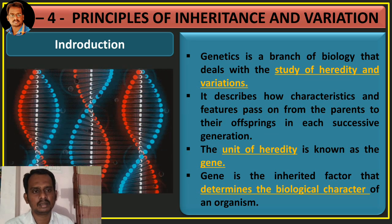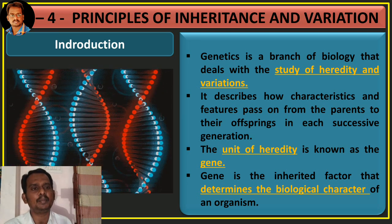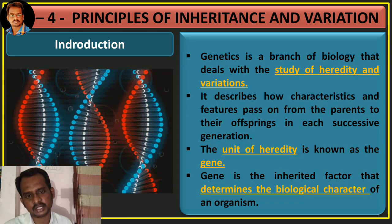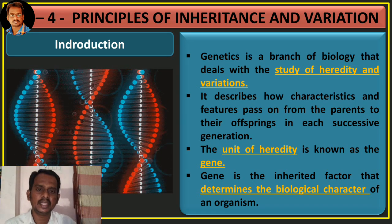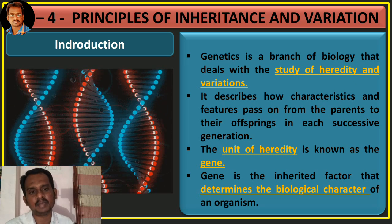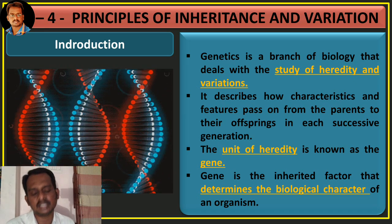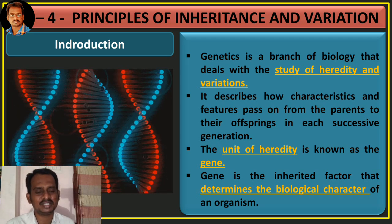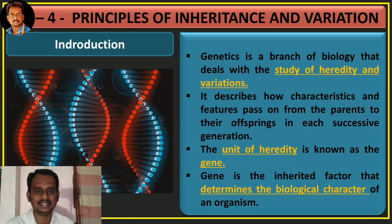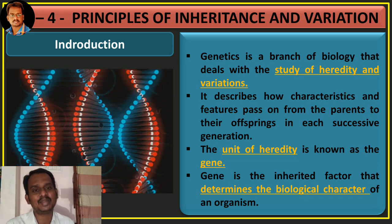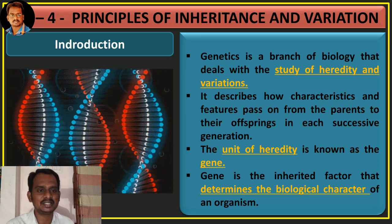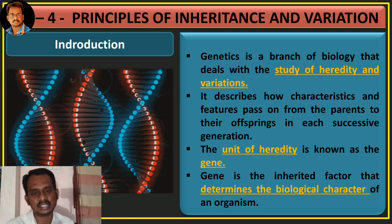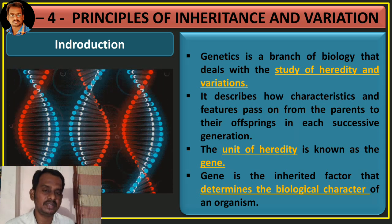How do characteristic features pass from parents to offspring in each successive generation? Every characteristic feature transfers as a branch of genetics. This is a DNA molecule — this is the basic unit of heredity. The unit of heredity is known as a gene.